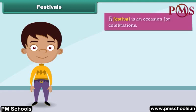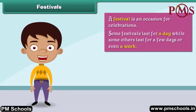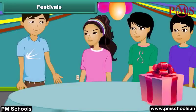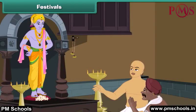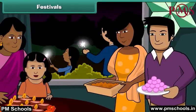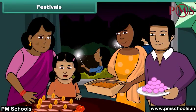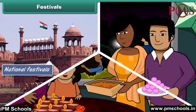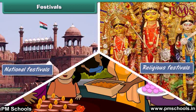A festival is an occasion for celebrations. Some festivals last for a day while some others last for a few days or even a week. Festival times are happy times. During a festival, we clean and decorate our houses, wear new clothes, pray to God, exchange gifts with friends and relatives, and enjoy delicacies. Festivals can be broadly classified into three categories: national festivals, religious festivals, and harvest festivals.